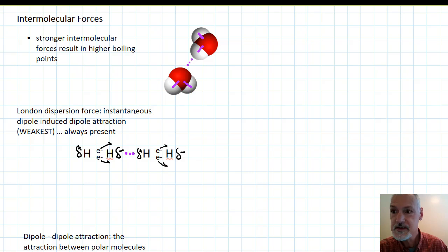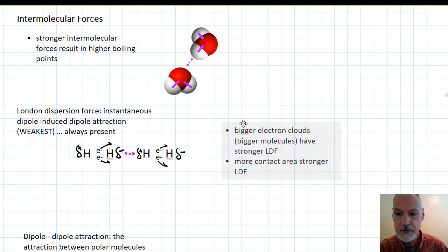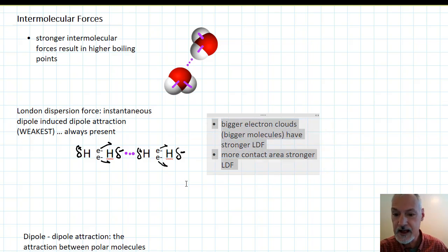This interaction occurs more often when we get bigger electron clouds. So if we have bigger molecules than say hydrogen gas, we move to fluorine, chlorine, or bromine. This would increase the likelihood of these electrons residing at one side more than another and create a stronger London dispersion force.